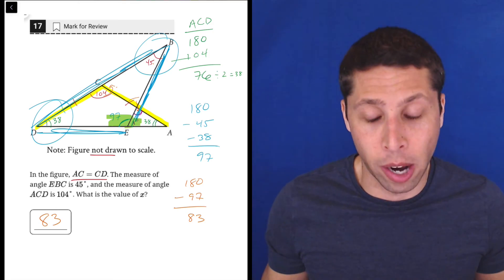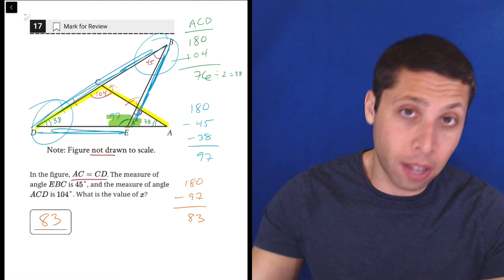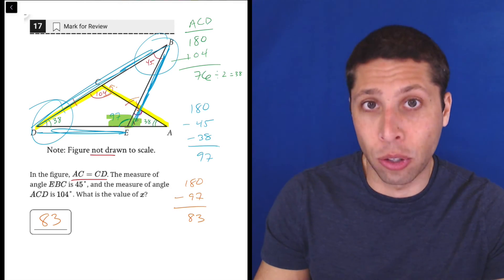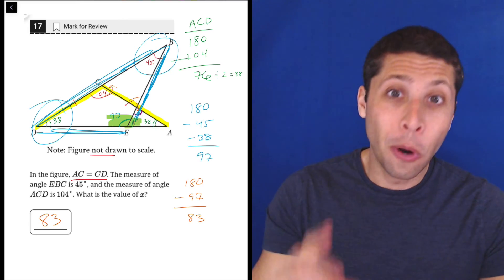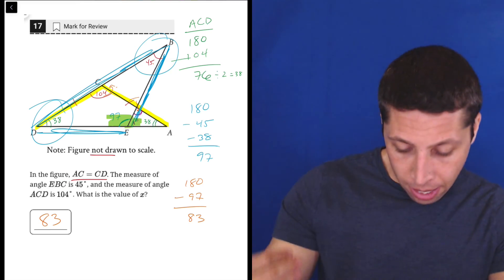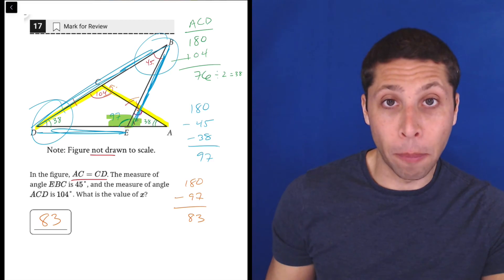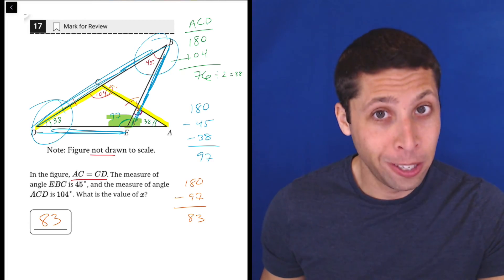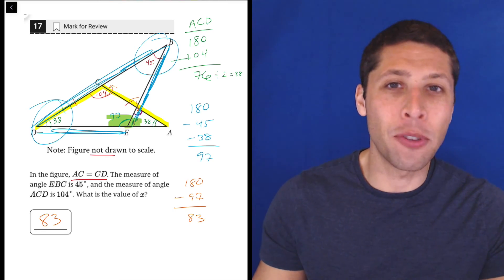You're going to need to think about that isosceles triangle. And if you got stuck on this question, I bet it was because you forgot about that isosceles triangle. Either you forgot the rule, or you just kind of forgot that they told you that CD and CA are equal.